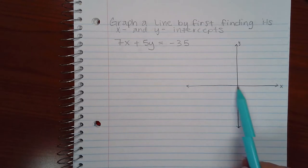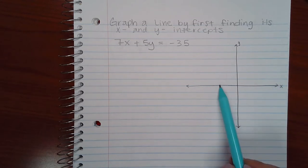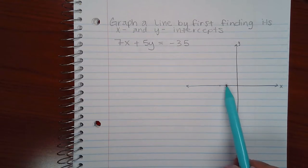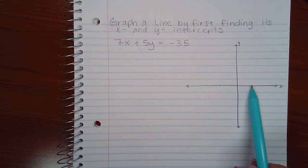Anywhere on the x-axis, the coordinates of the point would be whatever x value I'm at and the y value would be zero.